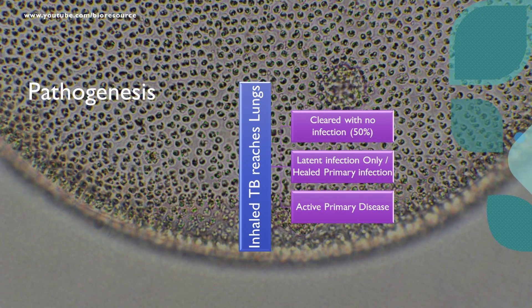When inhaled TB bacteria reach the lungs, one of three outcomes can occur. In about 50% of cases, it is cleared without any infection. It may cause latent infection only. On the other hand, it can develop into active infection. In the case of latent infection, if the person becomes malnourished or immunocompromised, it can progress to active infection.